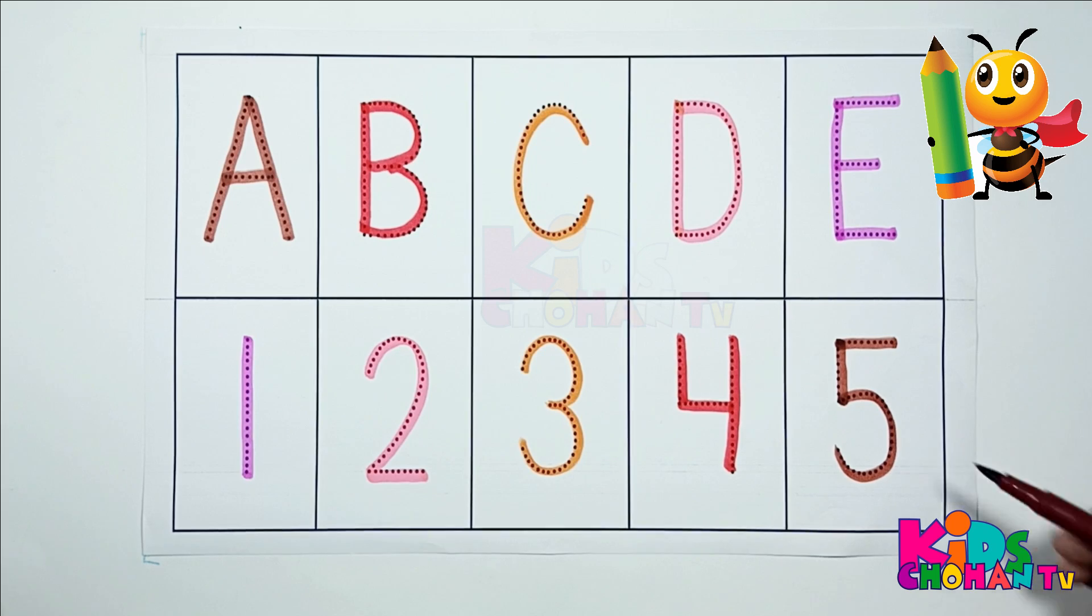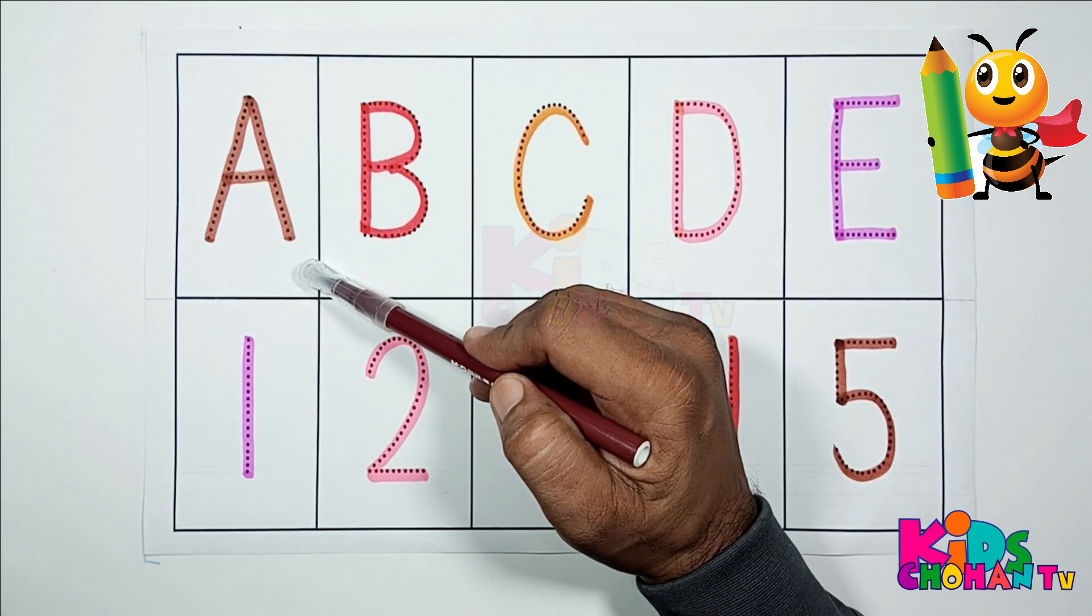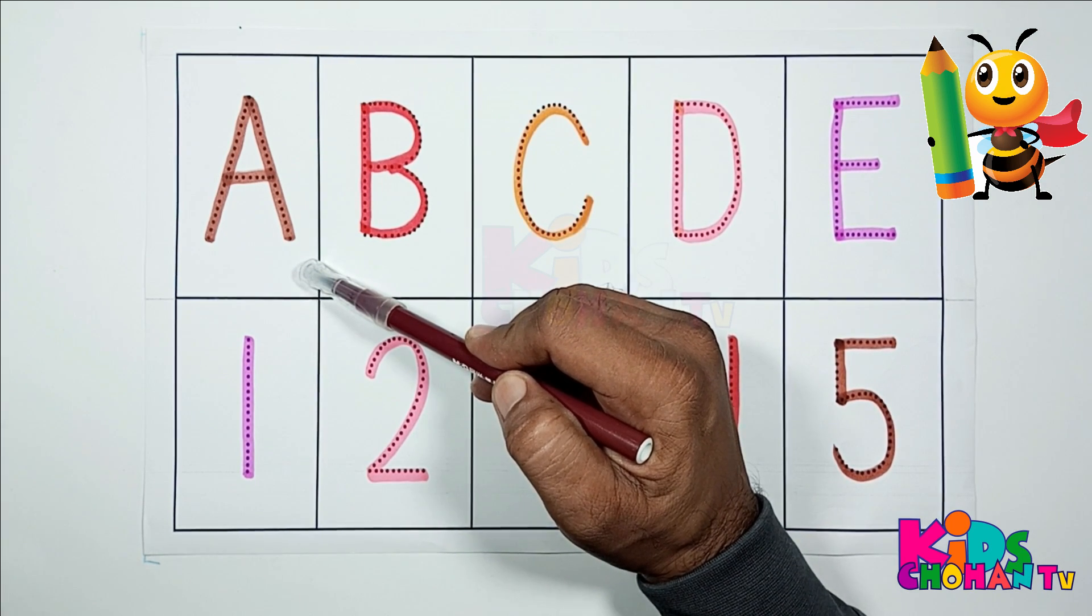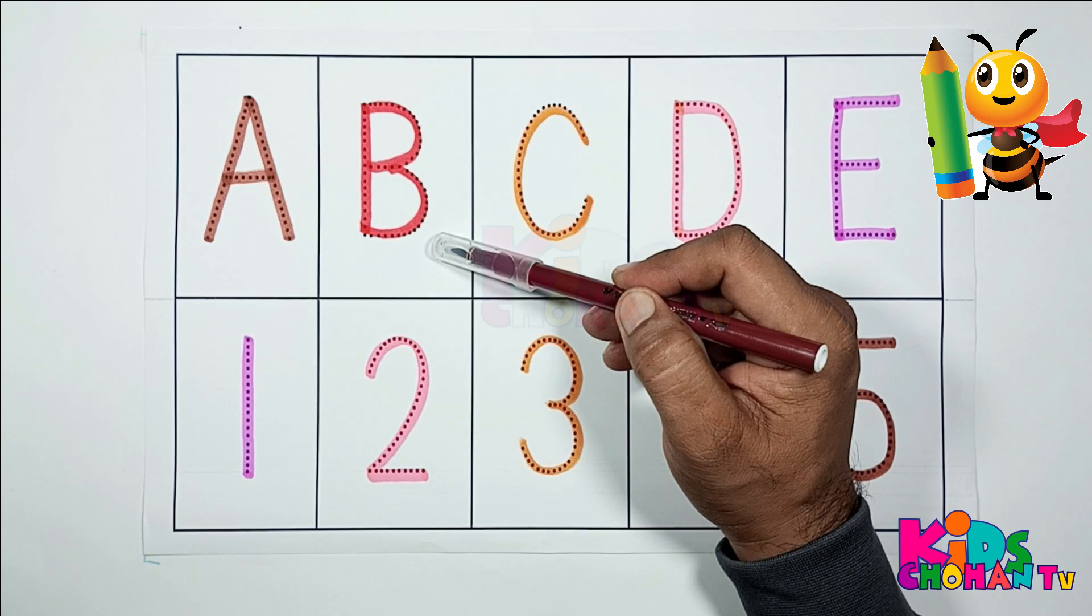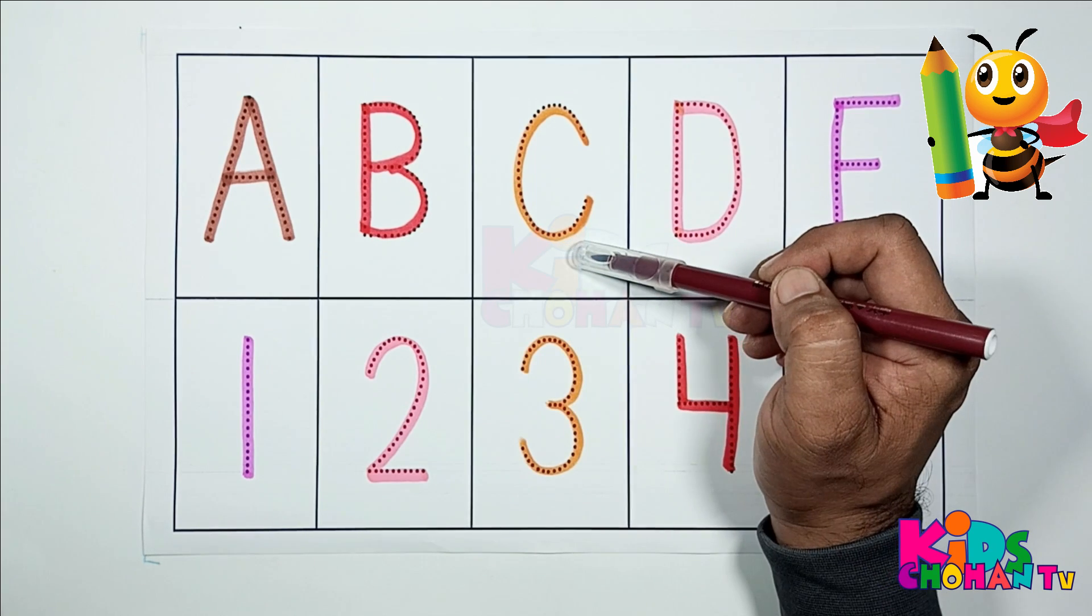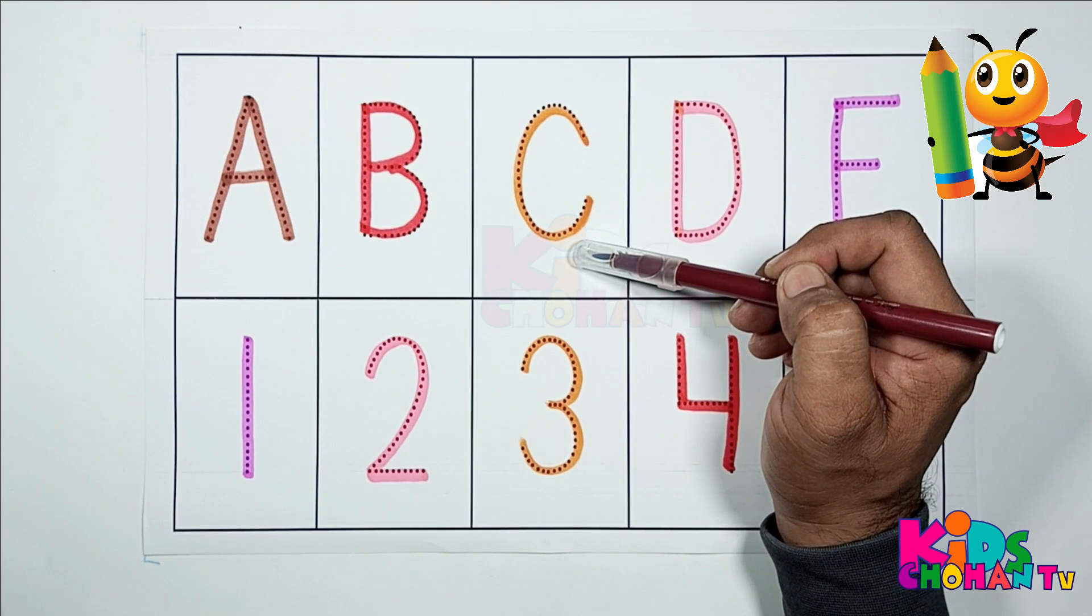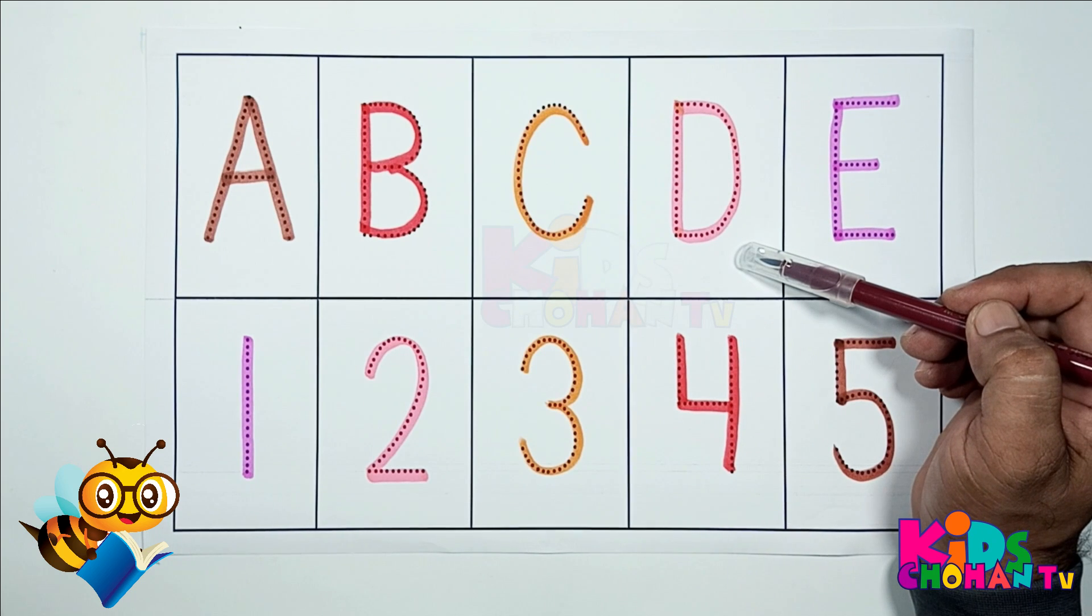Let's read again. A, A, A for apple. B, B, B for ball. C, C for cat. D, D for doll. E, E, E for eagle.